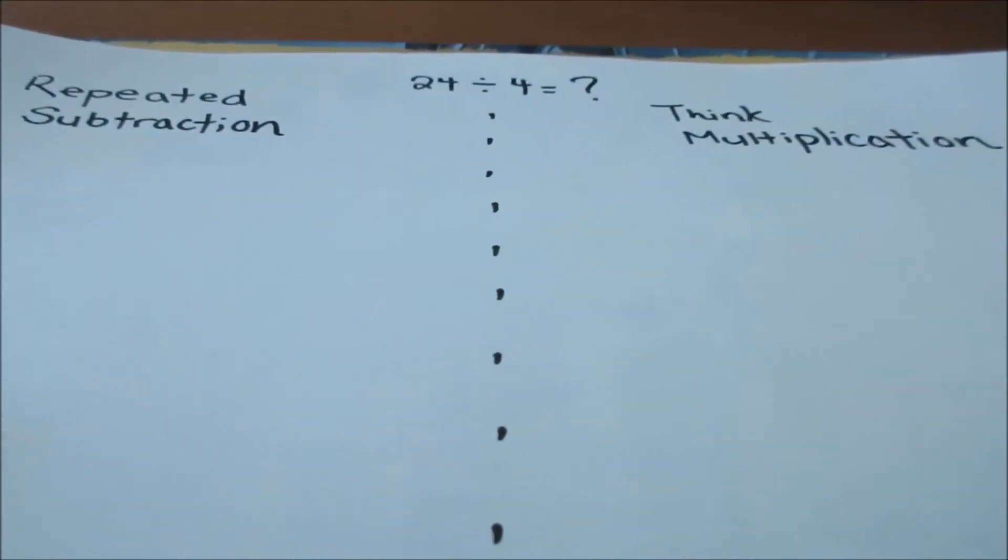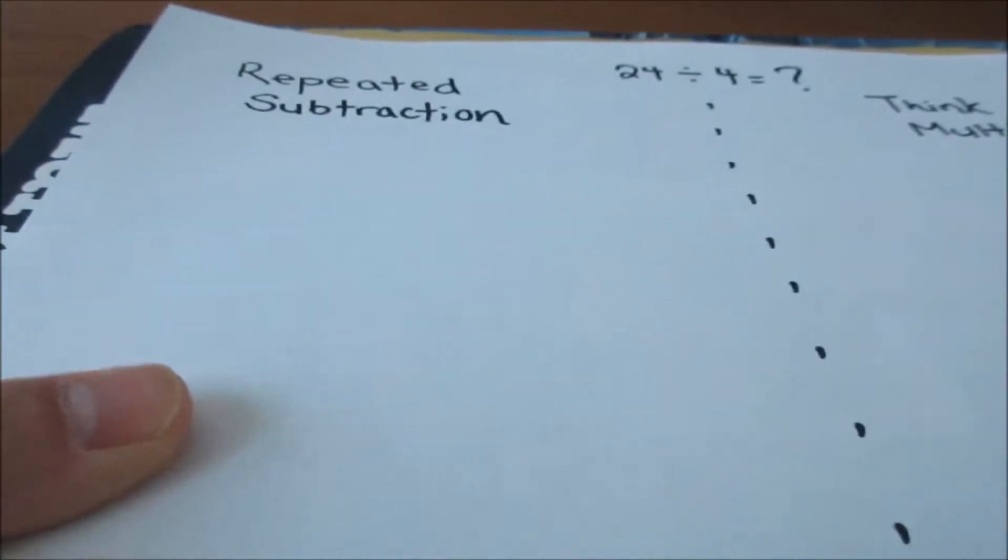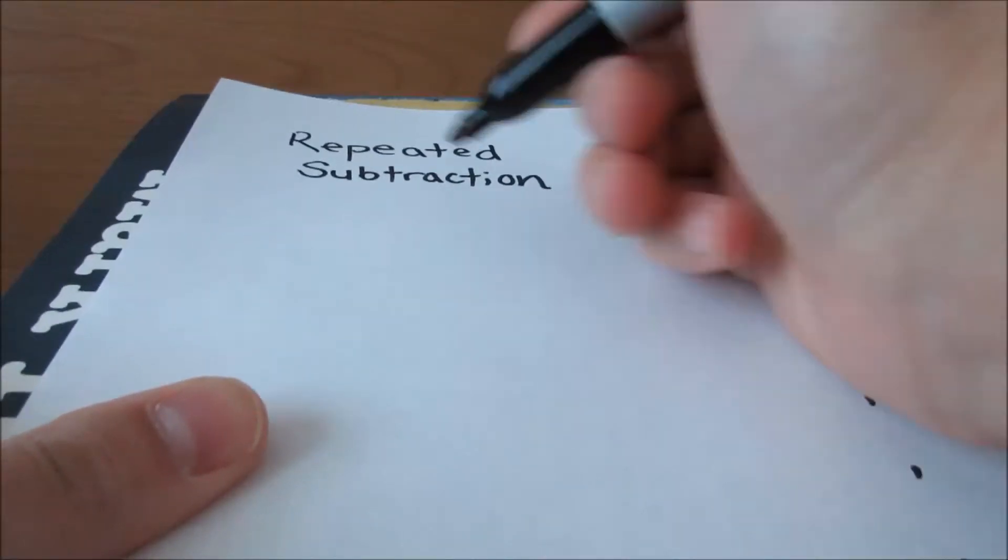We're going to look at the division strategies, repeated subtraction, and think multiplication for 24 divided by 4.